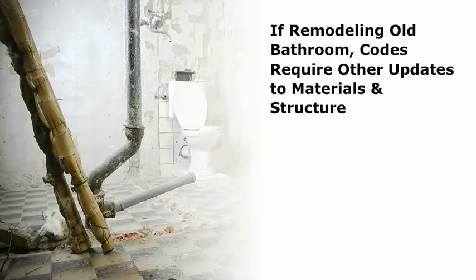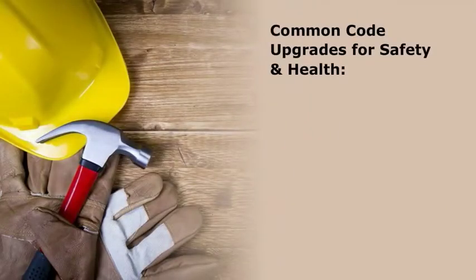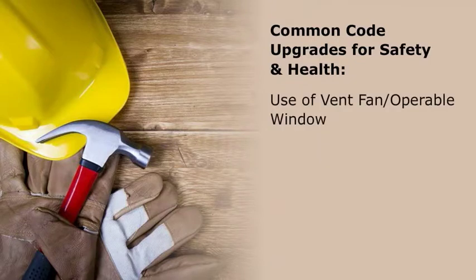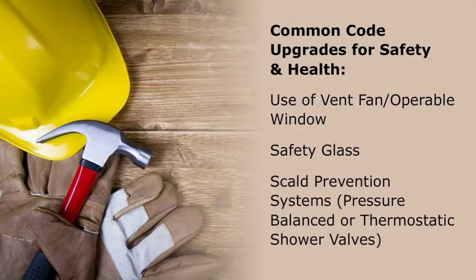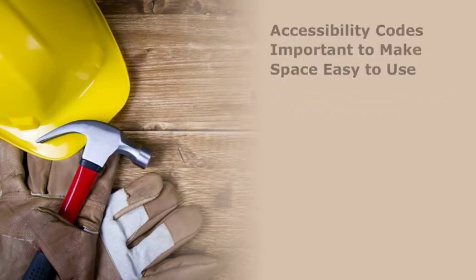If you are remodeling a fairly old bathroom, you may find that codes require other updates to your bathroom materials and structure. Some other common code upgrades for safety and health require the use of a vent fan or operable window, safety glass, and scald prevention systems like pressure-balanced or thermostatic shower valves. Accessibility codes are also important to make the space easy to use.